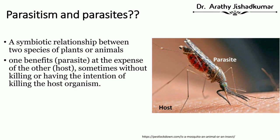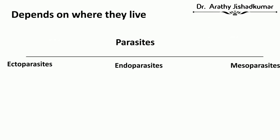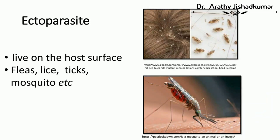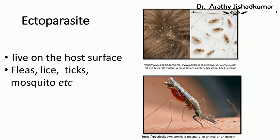Depending on where they live, parasites can be classified into three: ectoparasites, endoparasites, and mesoparasites. Ectoparasites live on the host surface. Examples include flea, lice, ticks, mosquito, etc.